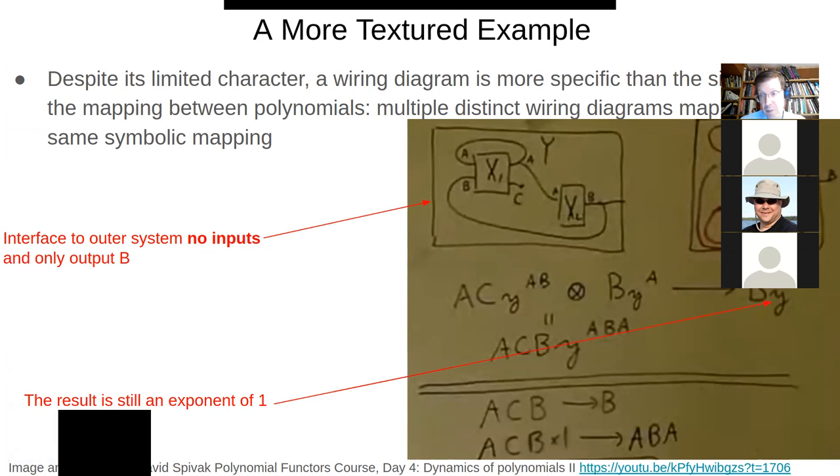Here we have B. B is the only output. And you'll notice that there's this Y here. And you might think it's Y to the zero because there's no inputs.